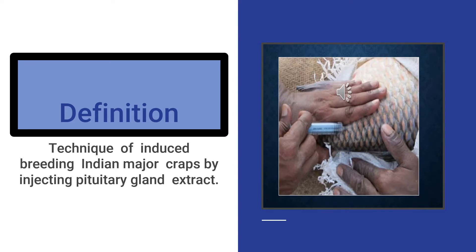Indian major carps are induced to spawn by injection of pituitary extract; this process is called hypophysation. In this method, the pituitary gland extract is injected into the fish, and the gland induces the fish to breed.